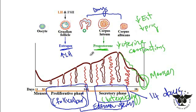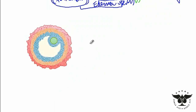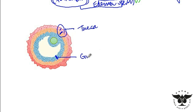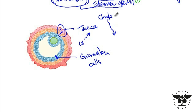Next I would like to explain how Graafian follicles produce estrogen. This is a schematic drawing of a Graafian follicle — we have the theca externa and then the theca interna, which are the theca cells, and then the blue layer represents the granulosa cells. Upon stimulation by luteinizing hormone, theca cells induce the conversion of cholesterol into androgen.